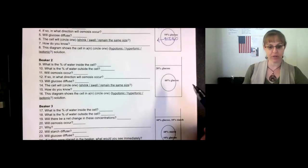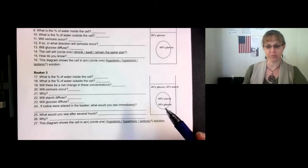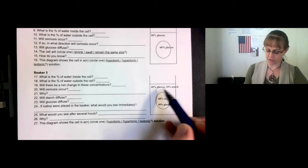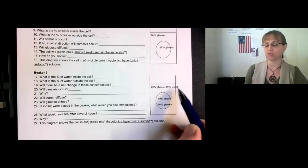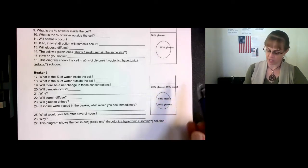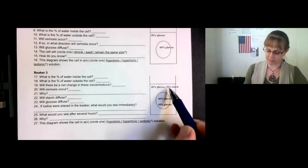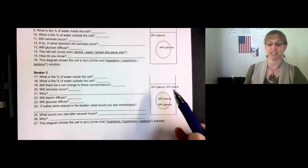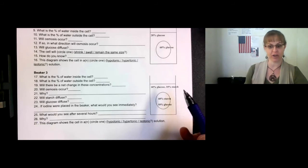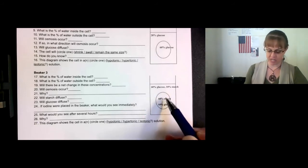Beaker number two, you will do the same sort of thing and figure it out the same way. For beaker number three, we have glucose, starch, and the rest of it is water. So 60 plus 10% gives us 70%. Subtract that from 100% and that will tell you how much water there is. The same here.